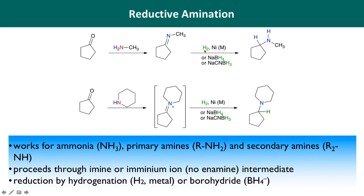Hydrogenation is one method: treat with hydrogen gas and a transition metal catalyst. Nickel is shown here, but others are possible like palladium, platinum, or ruthenium. More commonly, we can reduce the imine to a single bond with sodium borohydride. A close variant is sodium cyanoborohydride—both affect the same reaction. The mechanism for sodium borohydride reduction of imines is very close to its reduction of ketones and aldehydes.